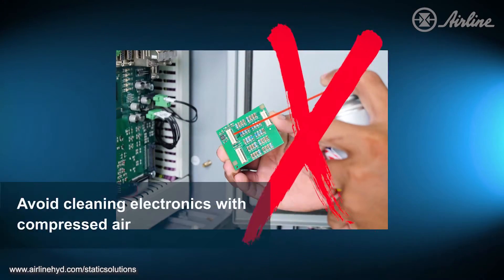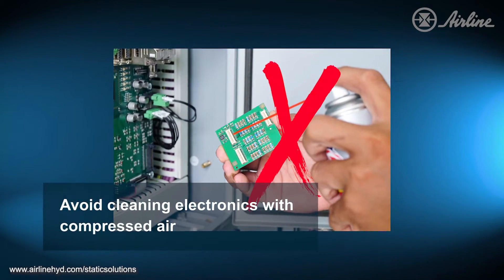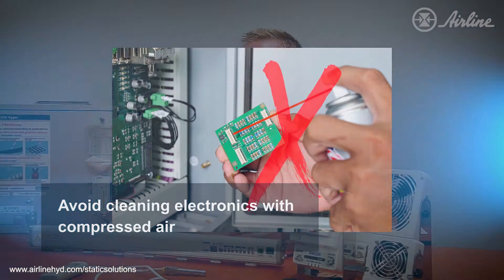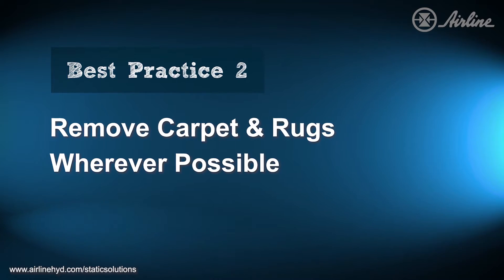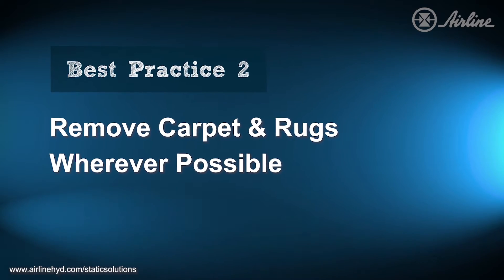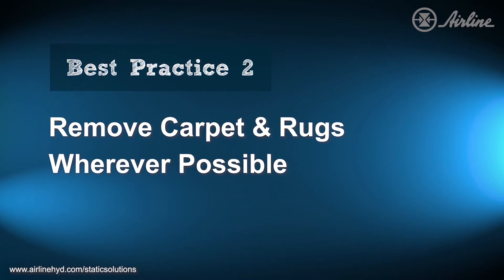Also, avoid cleaning your electronic product with compressed air unless it's ionized air, and we'll get to that later. The next best practice is to remove carpets and rugs from your plant wherever possible.